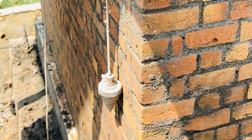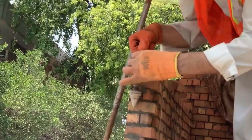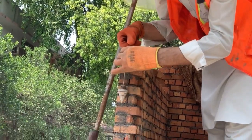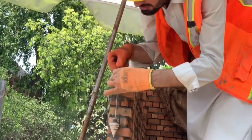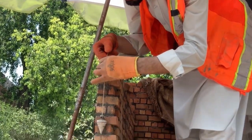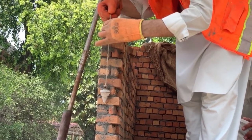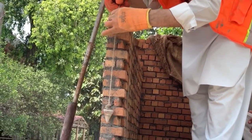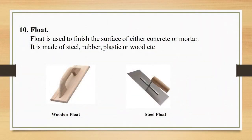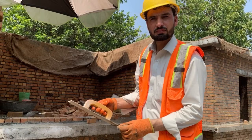Here we have taken a picture from the construction site showing the practical use of the plumb bob by masons. Tool number ten is the float. A float is used to finish the surface of concrete or mortar and is made of steel, rubber, plastic, or wood. In the pictures you can see one wooden float and one steel float. One of our colleagues is holding a steel float at the Ashraf Yard.